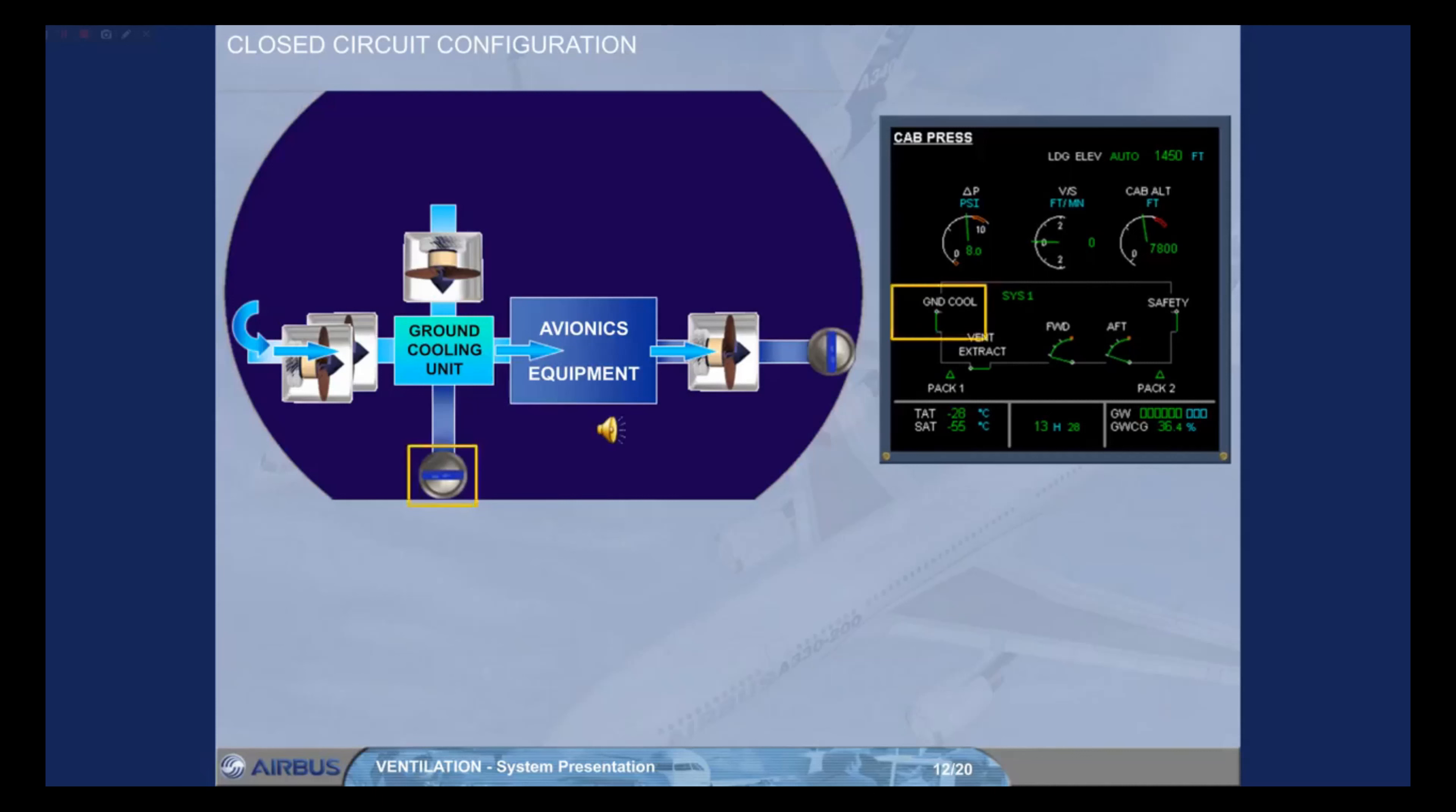In addition, the overboard extract valve is closed, and the air from the avionics equipment is blown through the underfloor extract valve under the forward cargo compartment, then overboard through the forward outflow valve.